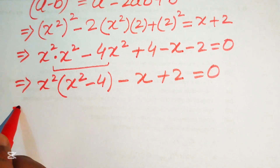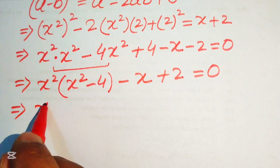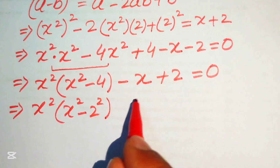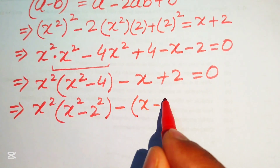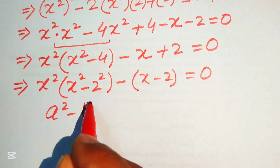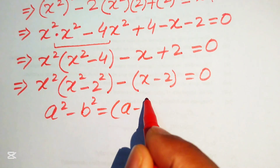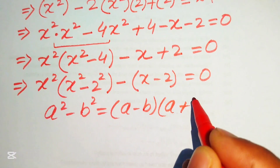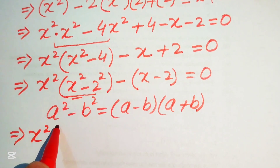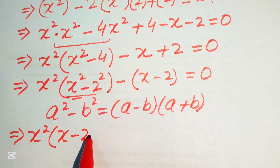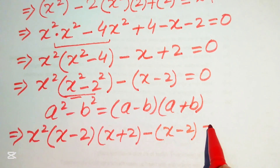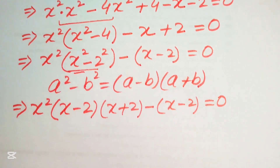We take out a negative sign and rewrite: x²(x² - 2²) - (x - 2) = 0. Applying the difference of squares formula a² - b² = (a - b)(a + b), we write this as x²(x - 2)(x + 2) - (x - 2) = 0.